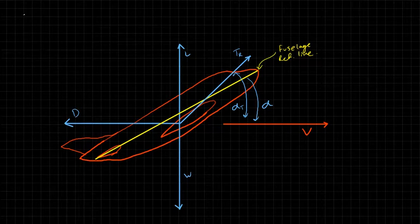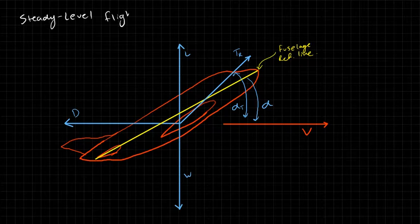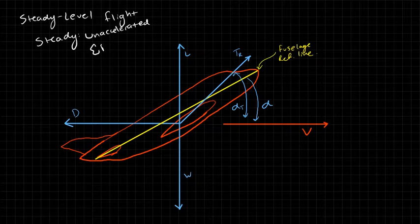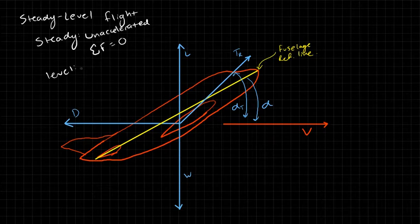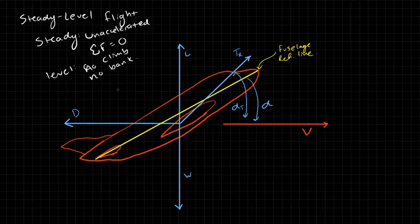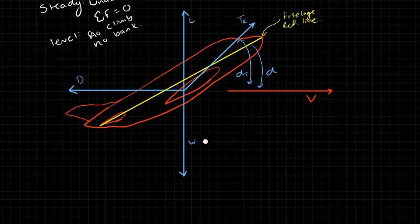What we're concerned with here is the thrust required to maintain steady level flight. There are two parts: steady, meaning unaccelerated flight — the sum of all forces in all directions equals zero — and level, meaning no climb angle and no bank angle. This is about the simplest flight condition we can have.